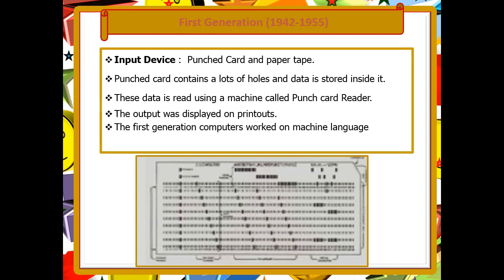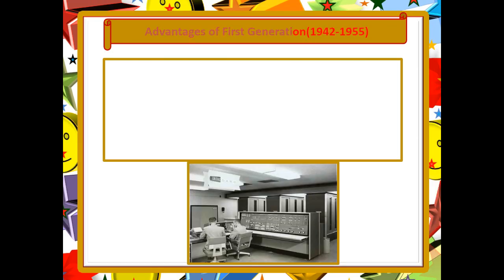The punch card is thick, like a card, and contains a lot of holes. All the data is stored inside these holes and this data is read using a machine called a punch card reader. The output was displayed on paper, or printouts. In the previous class we already learned about different languages. In first generation computers, machine language was used.